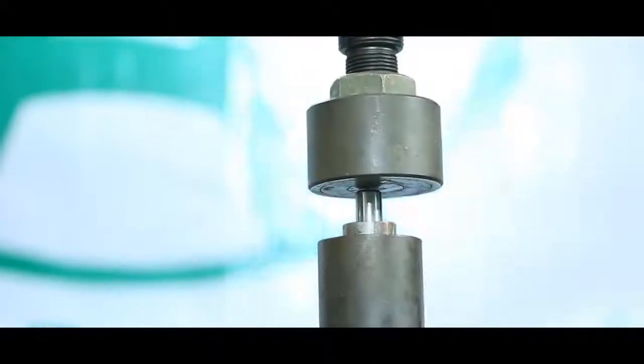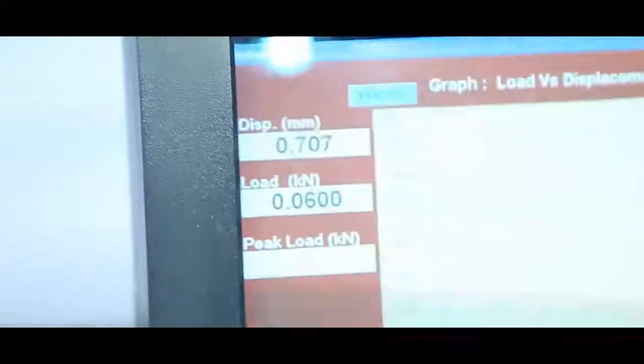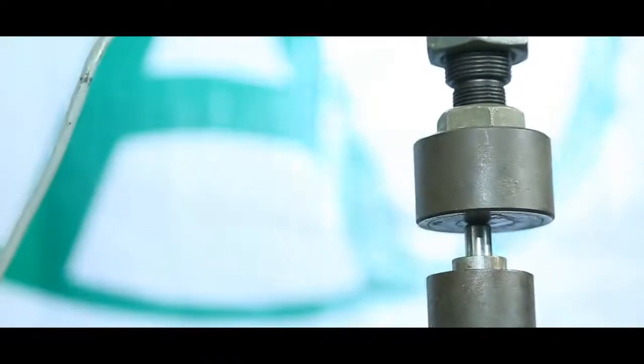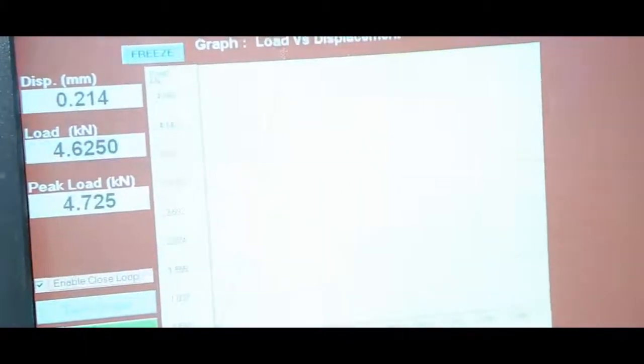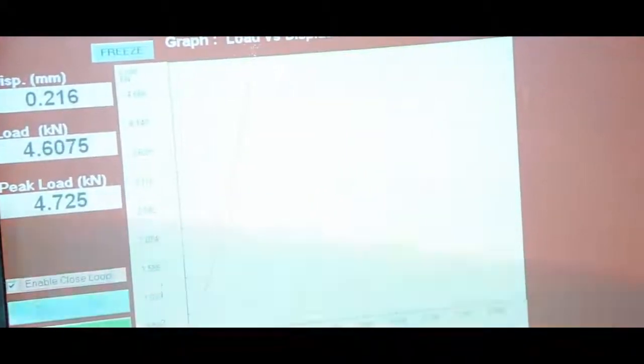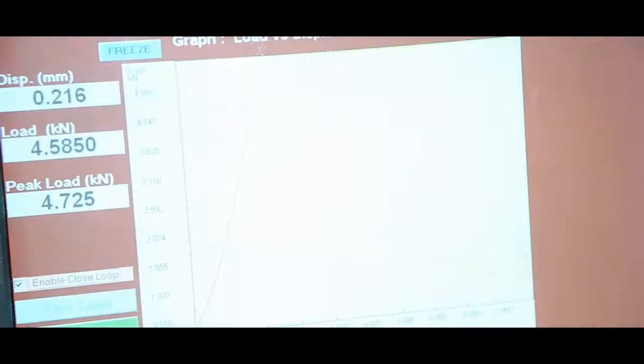We have placed the pin and bush onto the UTM. We will push the pin out of the bush using the universal test machine. We will calculate the load required to remove the pin, and with a simple calculation of force divided by the area of contact of the pin and bush, we will calculate the bonding strength in kgs per square centimeter.